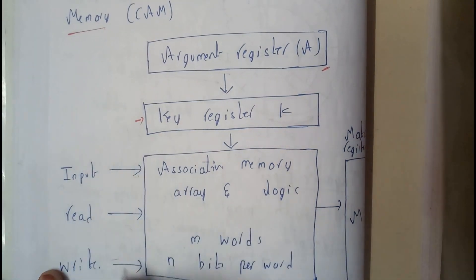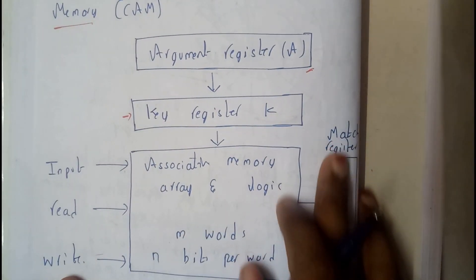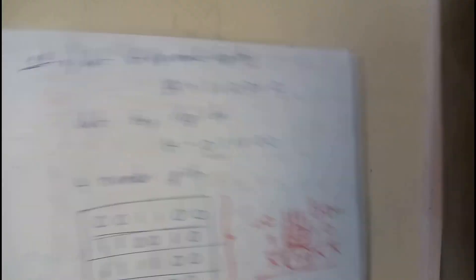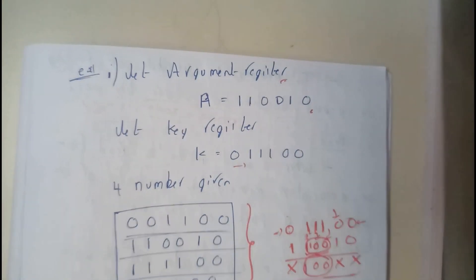It has input, read and write. So the final result will be stored in the match register whether they are matching or not. So once we are going through the example you will be having a clear idea. Don't worry.